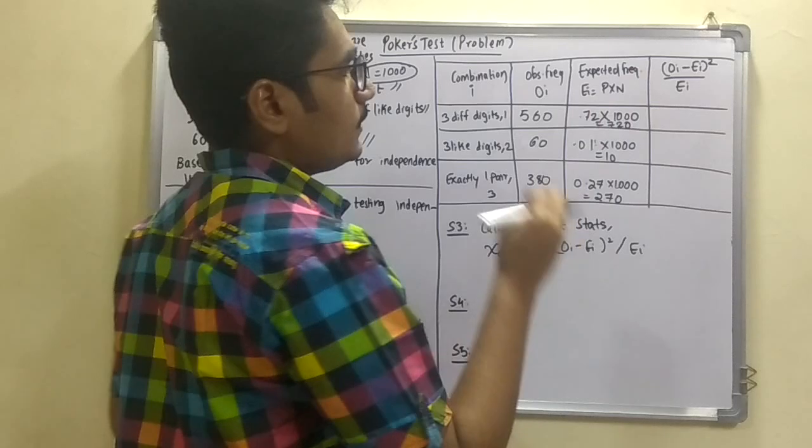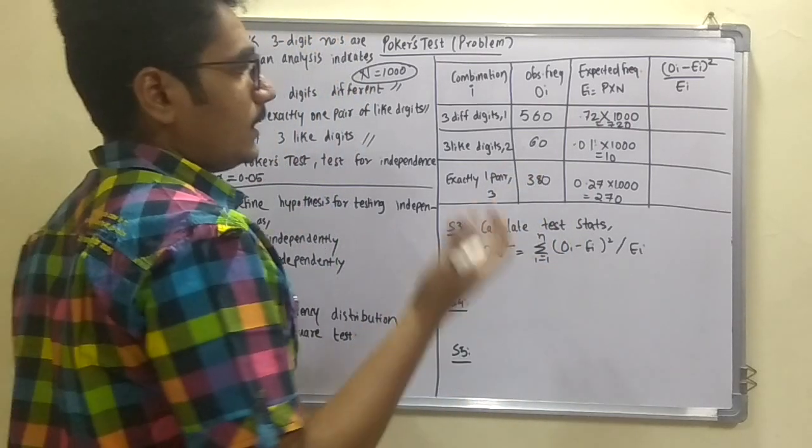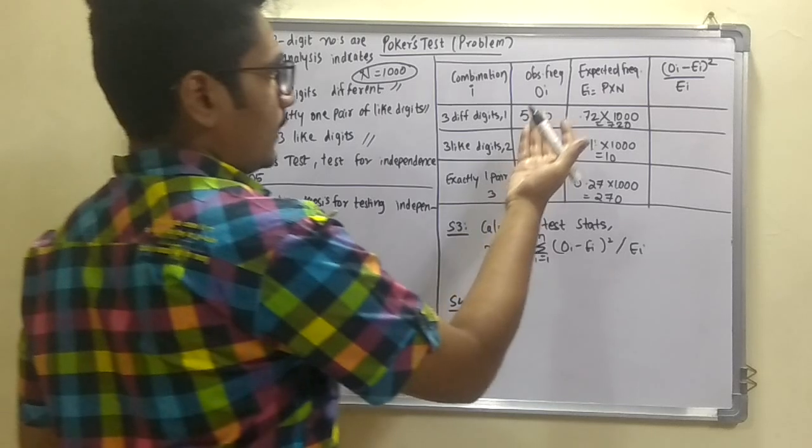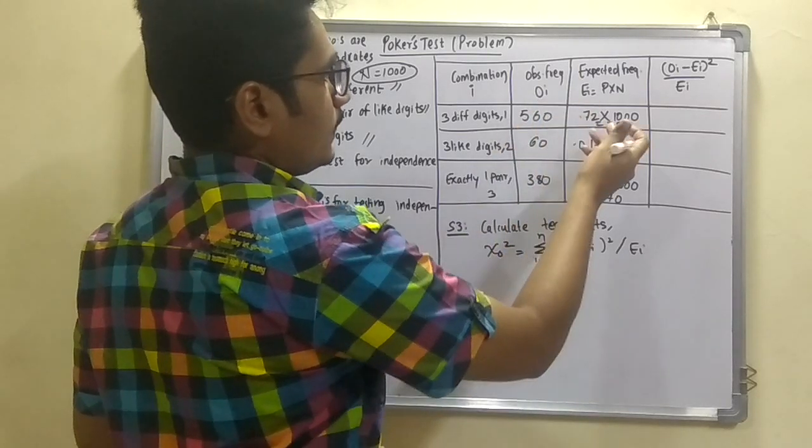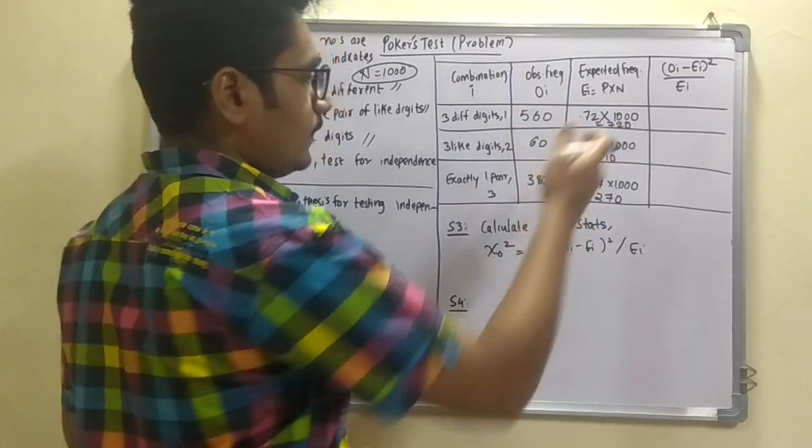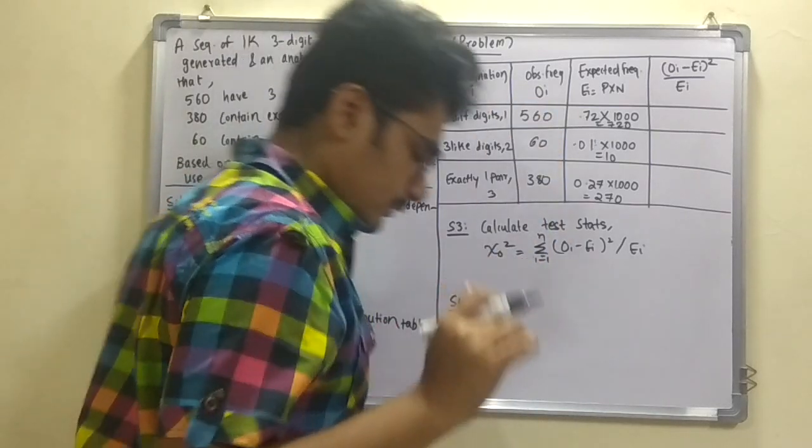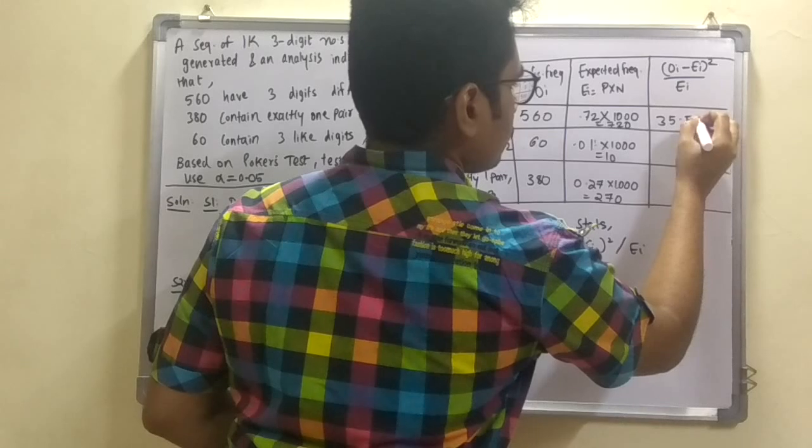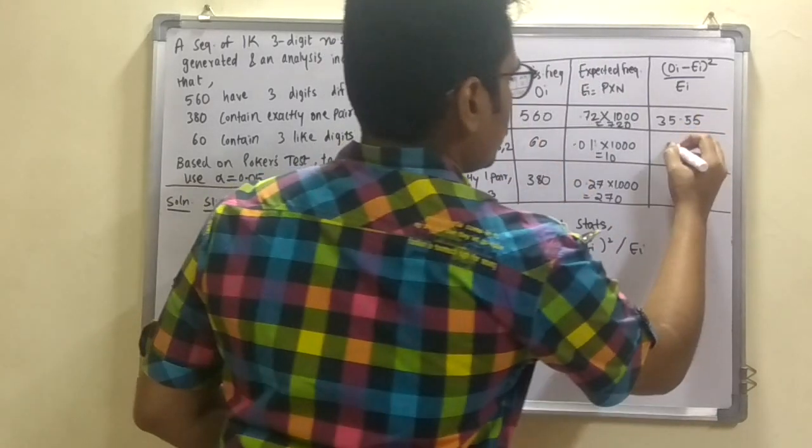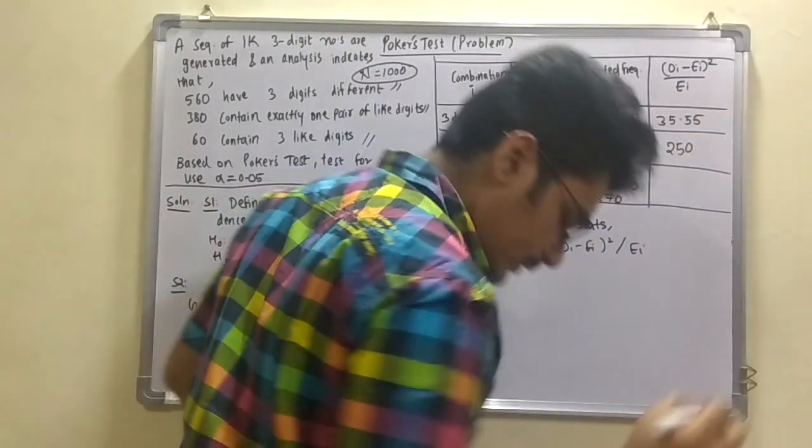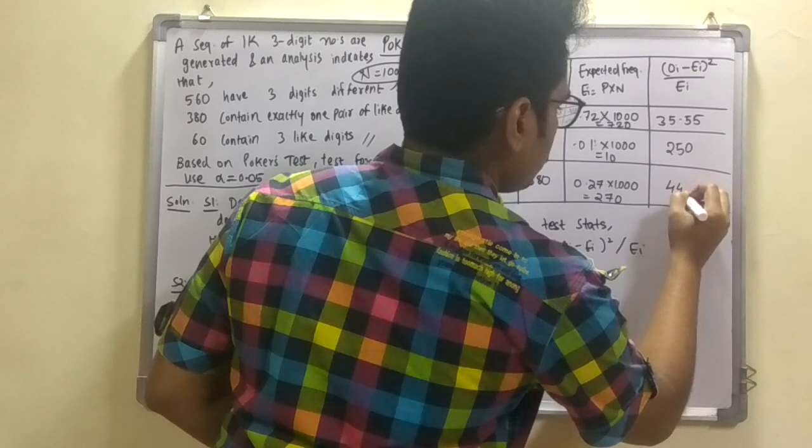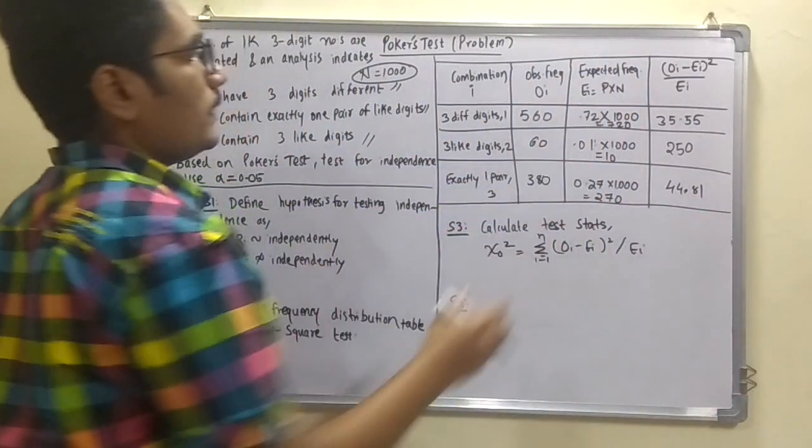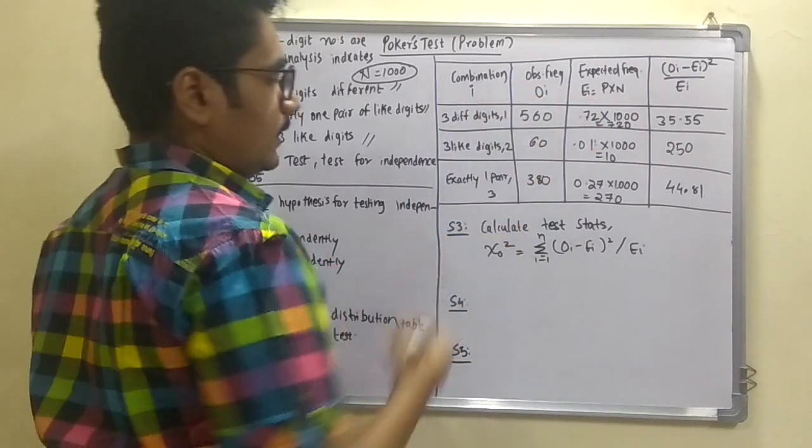Now to calculate this column that is the OI minus EI square divided by EI. So this is calculated just by applying this. That is the OI is 560 minus EI is 720. The square of that divided by this one. So I will write the values. That is the very first value is 35.55. Next is 250. And next is 44.81. So these are the values which you calculate for the next step.